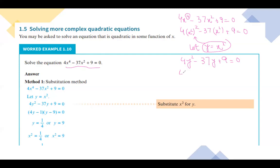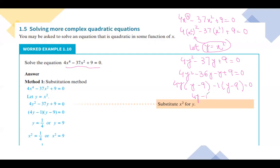Now simplify it: 4y² minus 36y minus y plus 9 equals to 0. Taking 4y² common gives y minus 9, then minus 1 times y minus 9 equals to 0. So we get the factors: 4y minus 1 equals to 0, and y minus 9 equals to 0.